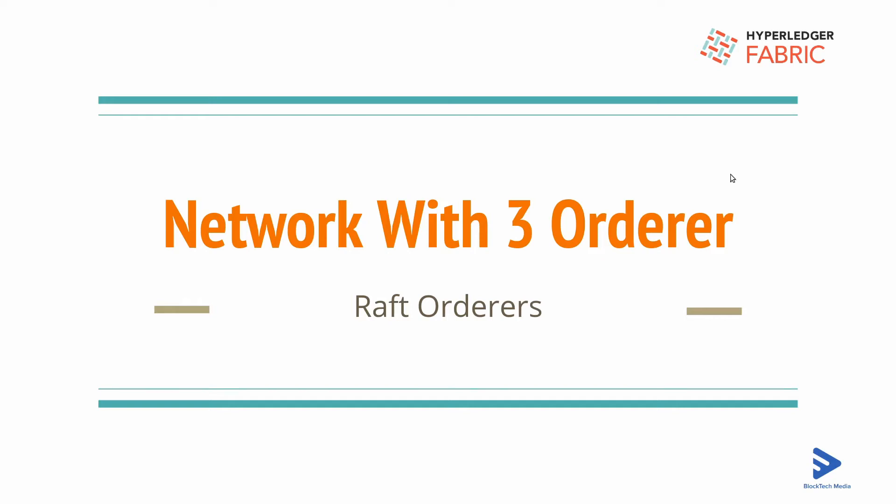In this video we are going to create a network with multiple orderers — that is 3 orderers, or you can choose 5 orderers as well. I will let you know the procedure to create these 3 orderers, how we can create them and what configurations are needed. Let's jump into VS Code.